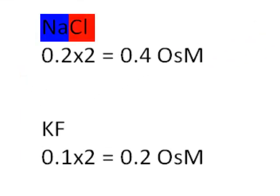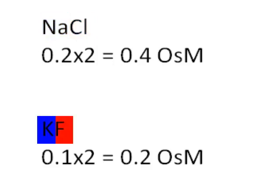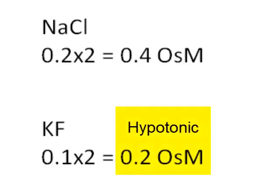For sodium chloride, the osmolarity is 0.4. The two ions in the formula times the molarity of 0.2 gives us 0.4 osmolar. The osmolarity of potassium fluoride is 0.1 molar times 2, which is 0.2 osmolar. So because potassium fluoride has the lower osmolarity, potassium fluoride is hypotonic to sodium chloride.